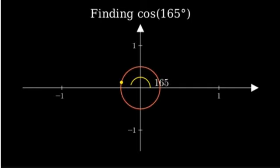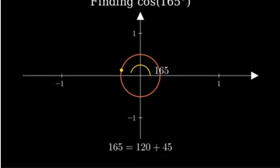One way to find cosine of 165 degrees is to break it down into a sum of two angles that we know well. We can write 165 degrees as 120 degrees plus 45 degrees.